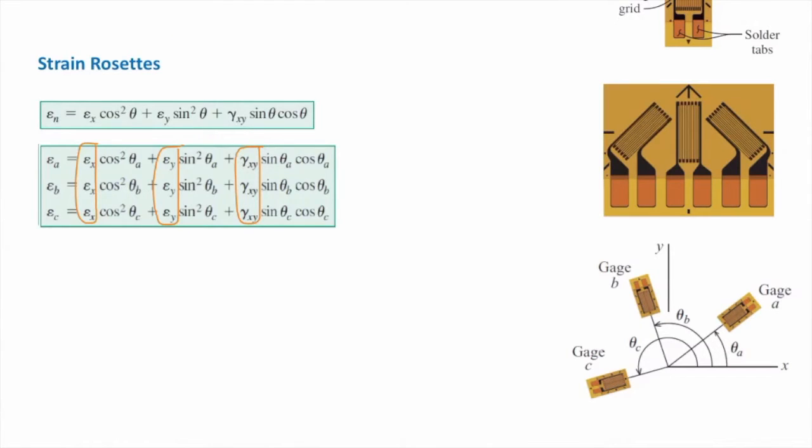Once we determine the value of strain in each of these gauges, we can then put a system of equations and solve for epsilon x, epsilon y, and gamma xy.